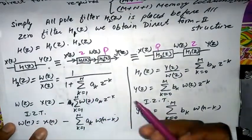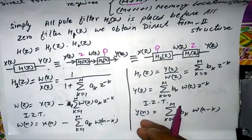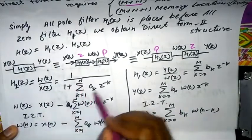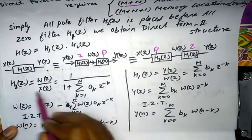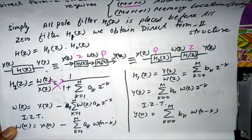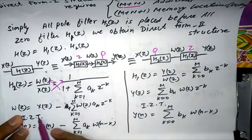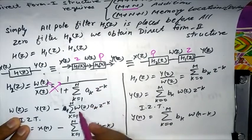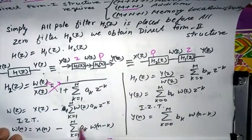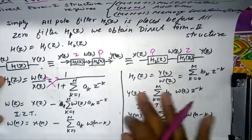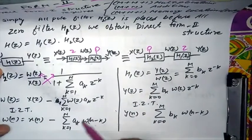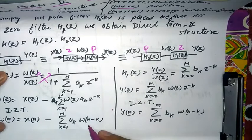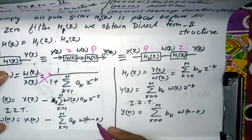We can also verify this mathematically. When we use H2(z), the all-pole filter, we cross-multiply the term and solve for W(z). W(z) becomes X(z) with the other term moved over, and after applying the inverse Z-transform using the time-domain shifting property, we get W(n - k).